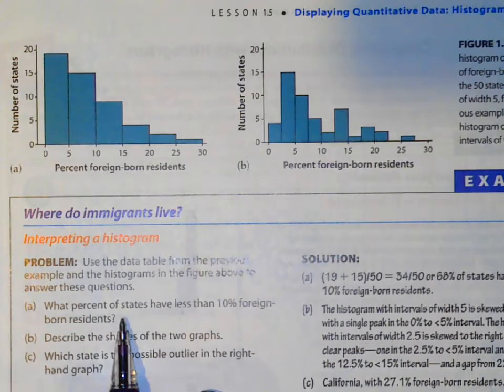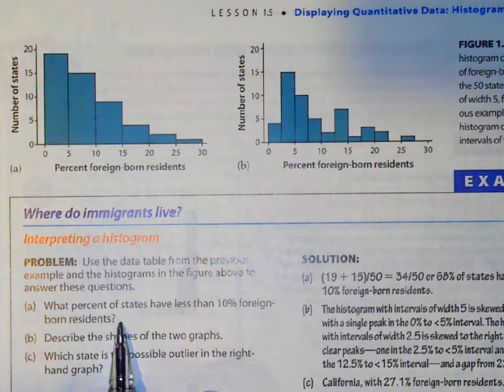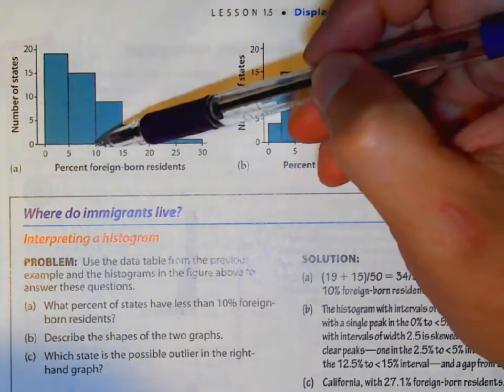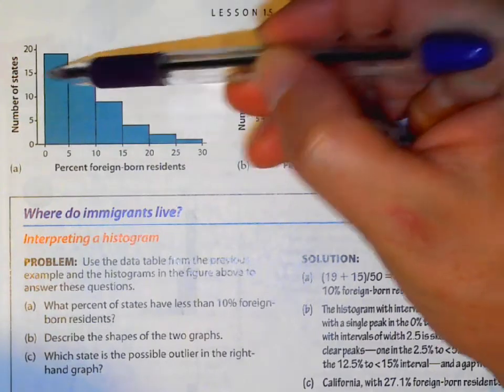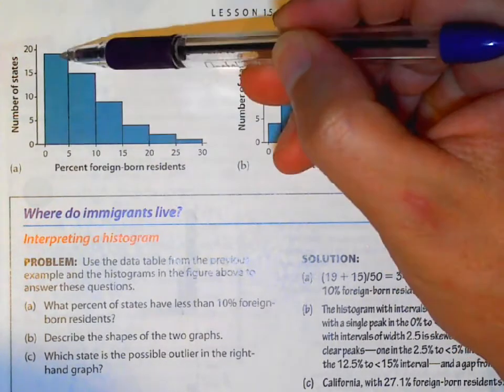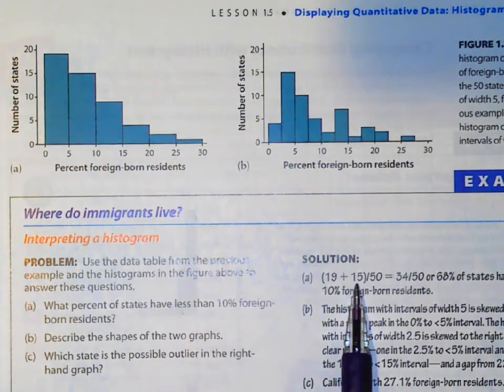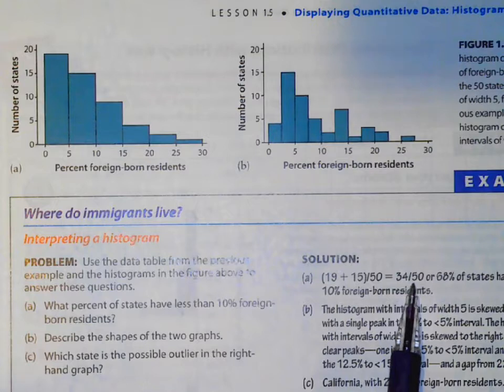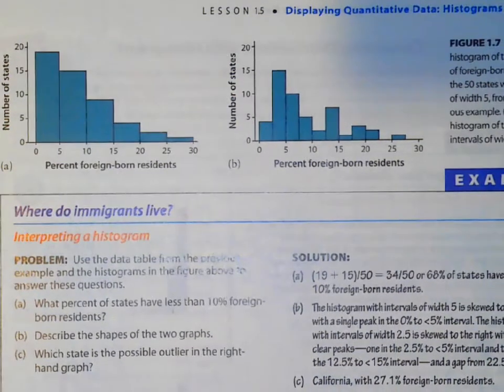So let's ask some questions here. What percent of states have less than 10% foreign-born residents? So less than 10 would be 15% plus our 19%, 15 plus 19 is 34. So 34 out of the 50 states or 68% of the states had less than 10%.